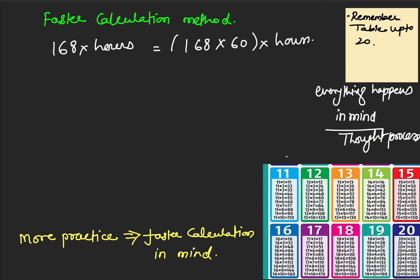The thing I wanted to discuss was that this question was about faster calculation. There is a conventional method of calculation. If I want to calculate 168 into 60, the conventional method says 168 into 60.